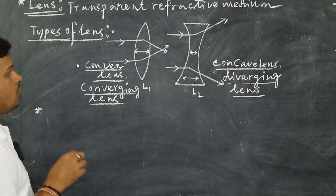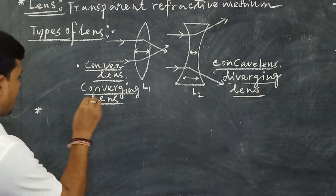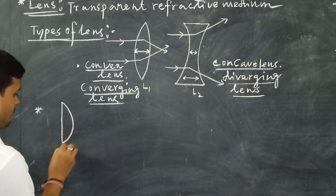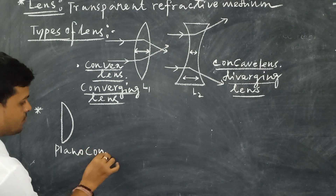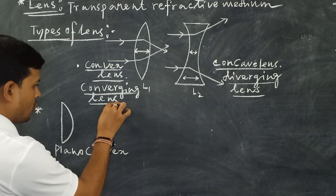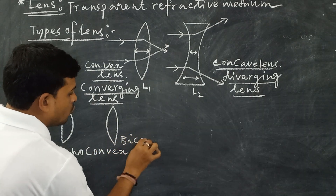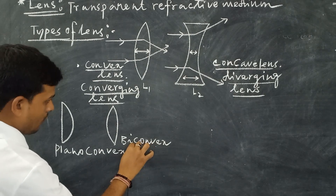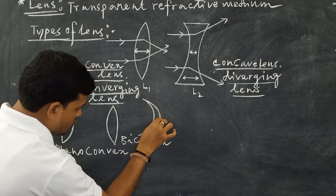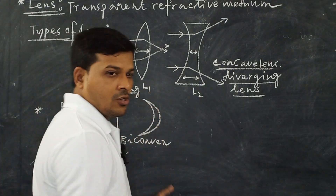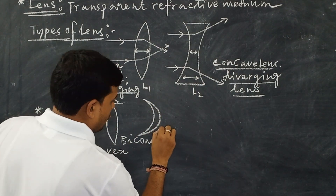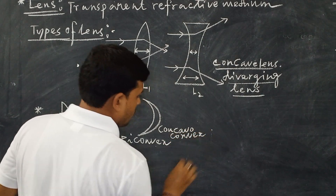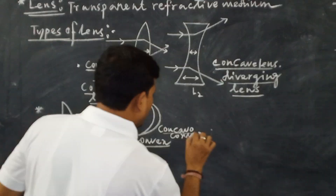There are also different types of convex lenses based on their shape. The first kind has one plane surface and one curved surface — this is called planoconvex. The second kind has two spherical surfaces — this is called bi-convex. The third kind is shaped like a crescent moon — this is called concaveconvex.